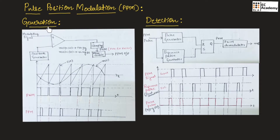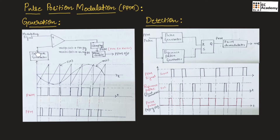Let us understand the generation of PPM signal. This is the block diagram used for generation of PPM signal. It consists of a comparator, clamping circuit, and monostable circuit with two inputs. The first input is the modulating signal and the second is the sawtooth signal generated from a sawtooth generator. The comparator compares the modulating signal with the carrier signal, which is the sawtooth signal, and produces output depending upon the message signal and carrier signal.